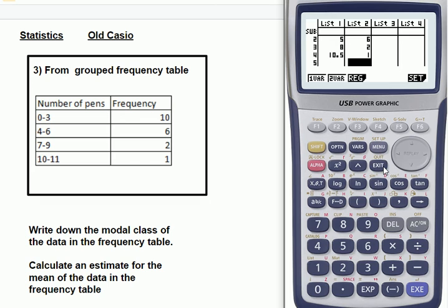So, the way that is, it's because list 2 is the frequency of the variable, and list 1 is the variable, as in number of pens.